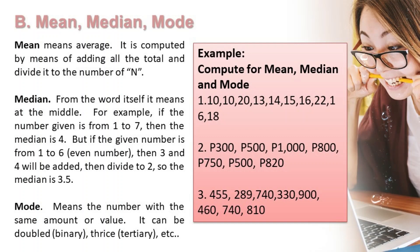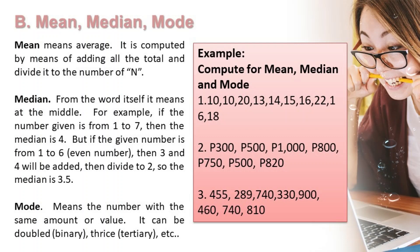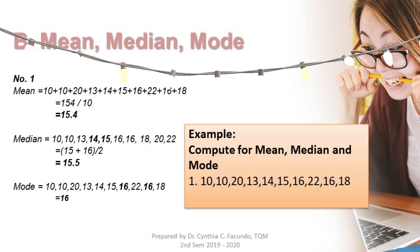For example number 1, we need to compute the mean, median, and mode. The given numbers are 10, 10, 20, 13, 14, 15, 16, 22, 16, and 18. For the mean, you just add them all and divide by the count. There are 10 numbers, so 154 divided by 10.